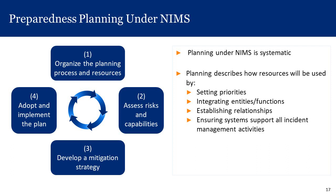In sequence, the planning process involves: organizing the planning process and resources; assessing risks and capabilities — different jurisdictions have different threat profiles, for example hurricanes are a key threat in Florida but not in Minnesota; developing a mitigation strategy — what would agencies do to mitigate the impact of an event once it occurred; and finally adopting and implementing the plan. It's also important to be flexible as an event evolves to modify the plan based on real-time needs, but it's essential to have a pre-event plan nonetheless.